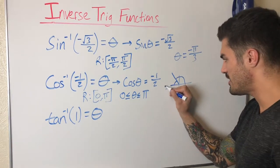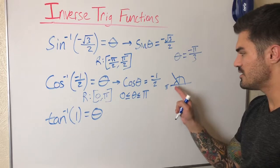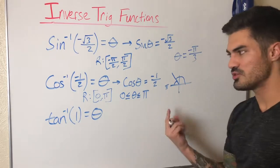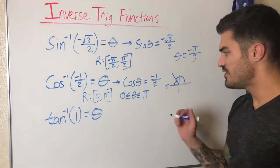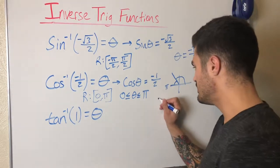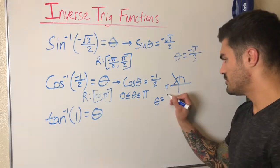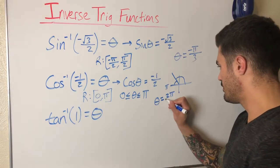I got two pi over three by taking pi and subtracting pi over three using my reference angle. So theta equals two pi over three.